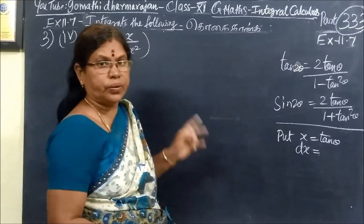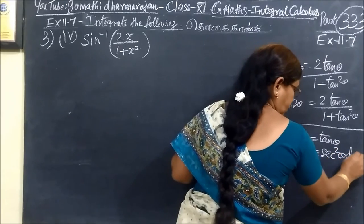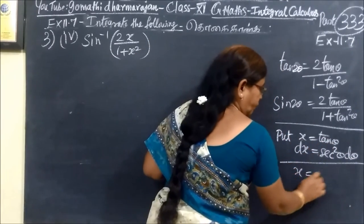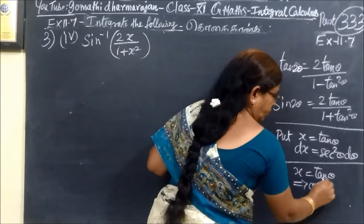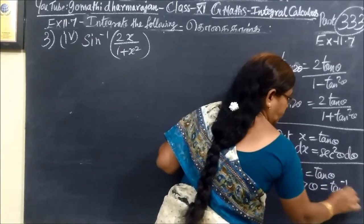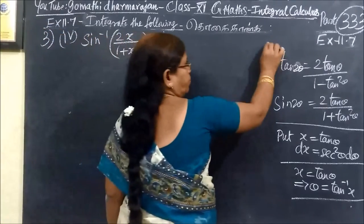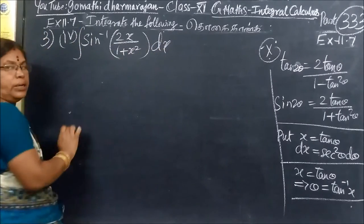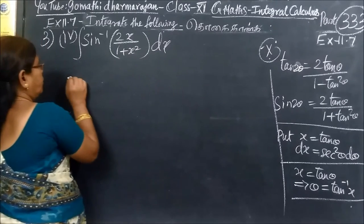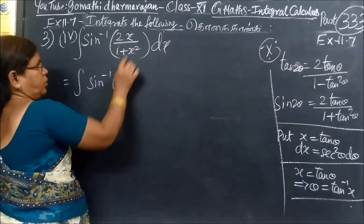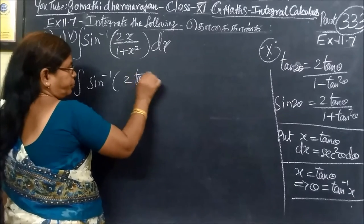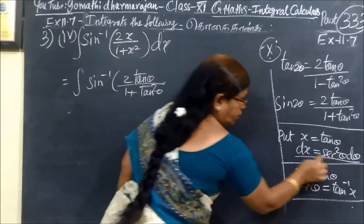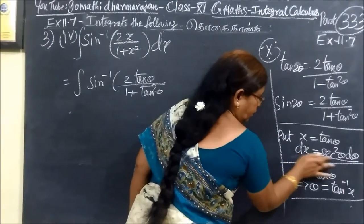The differentiation of tan θ gives us sec² θ. We are integrating sin inverse of 2x by 1 plus tan square θ, and we write this in terms of θ.